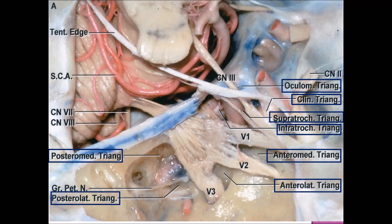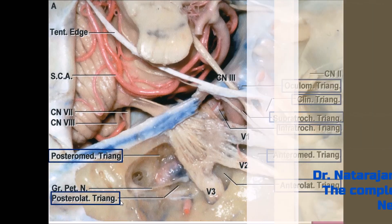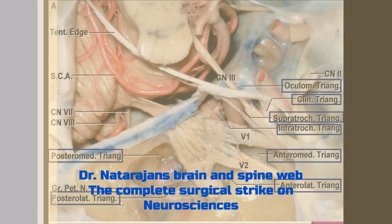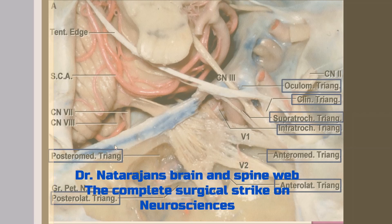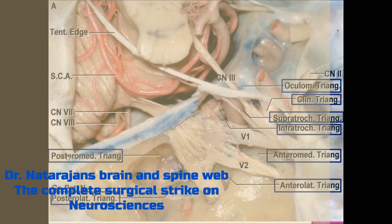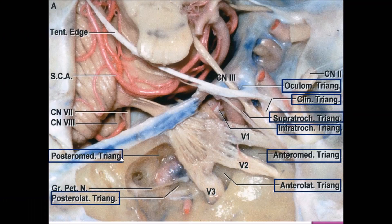The posterior triangles of the middle cranial fossa are the posterolateral and posteromedial triangles. The posterolateral triangle is called the glass box triangle, and the posteromedial triangle is also called the Kawase's triangle.